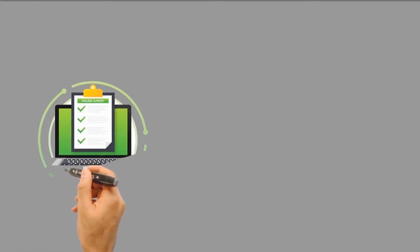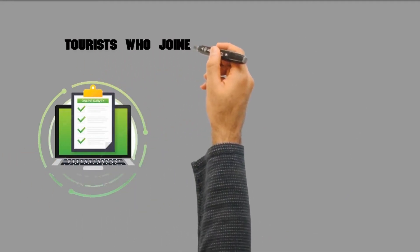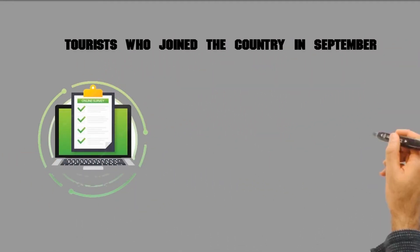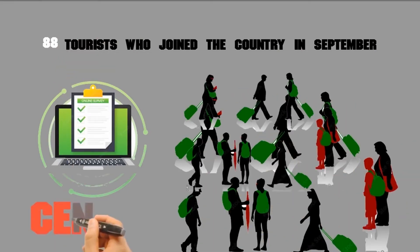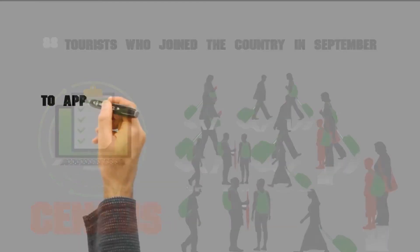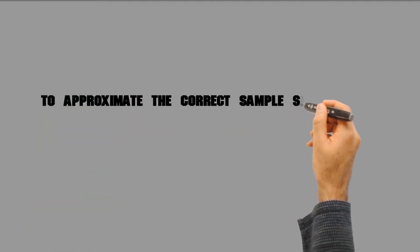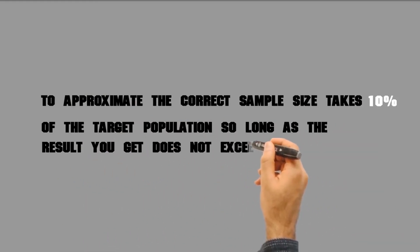So anyone doing a survey, perhaps for tourists who joined the country in September, and probably there were only 88 tourists who came to the country, only need to conduct a census. To approximate the correct sample size, take 10% of the target population, so long as the result you get does not exceed 1000.